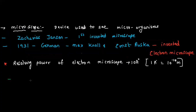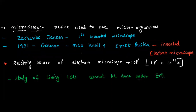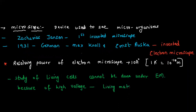The electron microscope uses electrons, while the light microscope uses light. There are simple and compound microscopes. Study of living cells cannot be done under an electron microscope because of the high voltage electron beam — any living tissue placed under an electron microscope would have all its cells killed due to the high-voltage electrons.